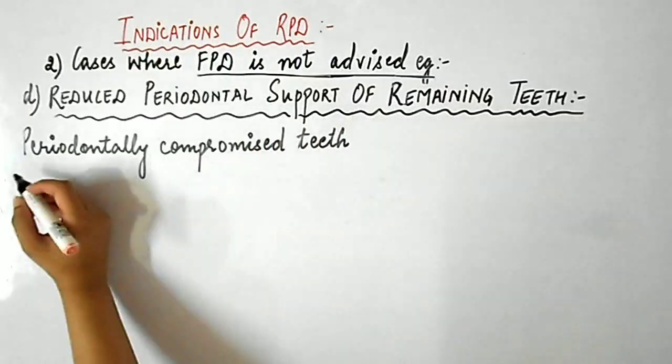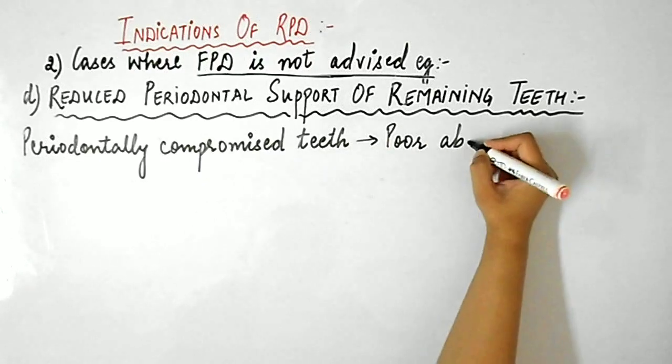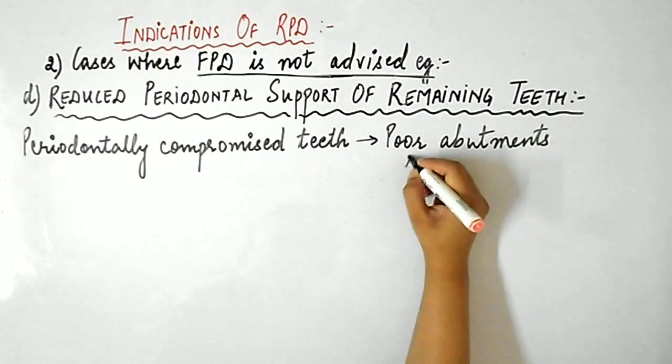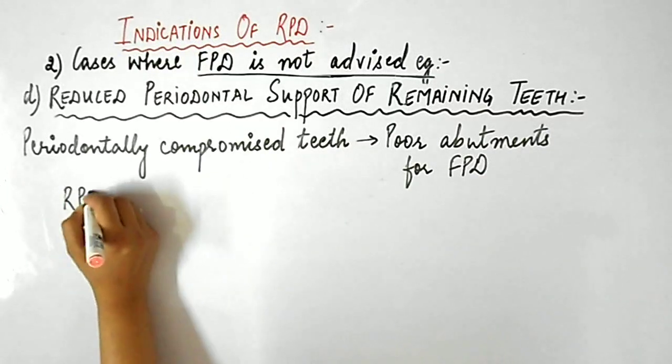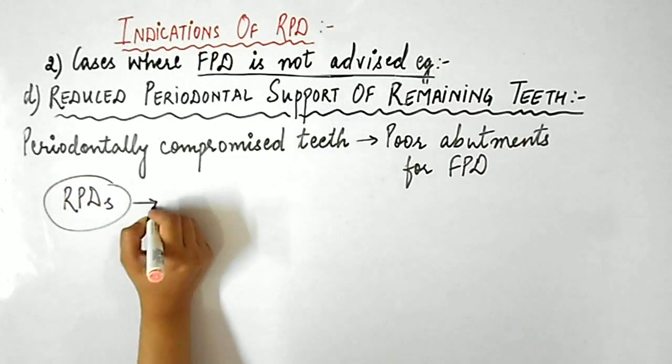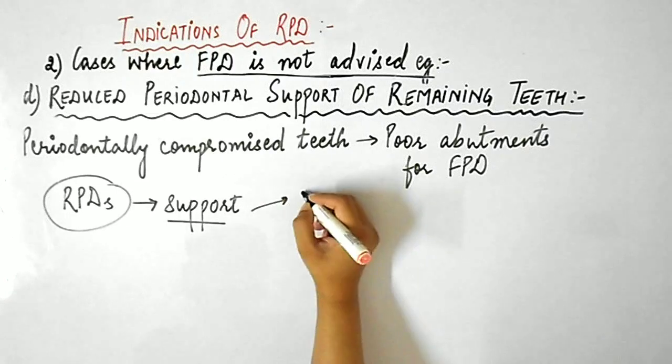Next indication is when periodontal support of remaining teeth is reduced. The periodontally compromised teeth act as poor abutments for FPDs. Although such teeth don't act as good abutments for RPDs either, in case of RPDs the support can be distributed between the teeth and the ridge.